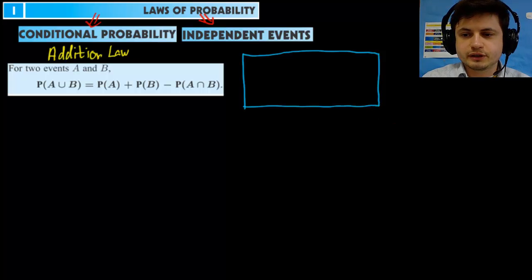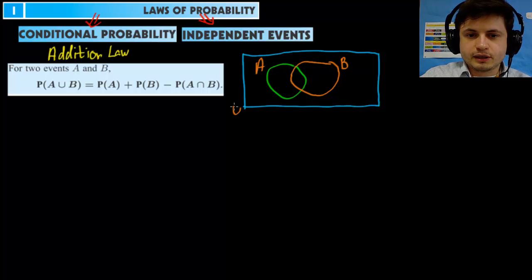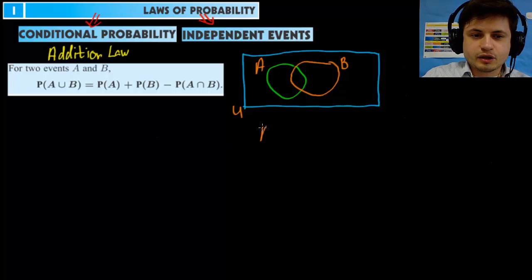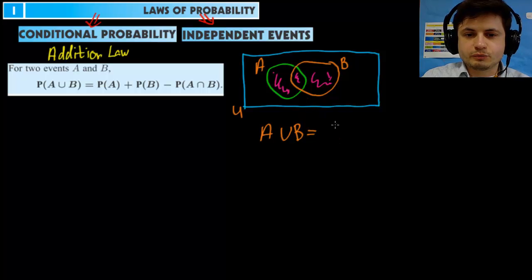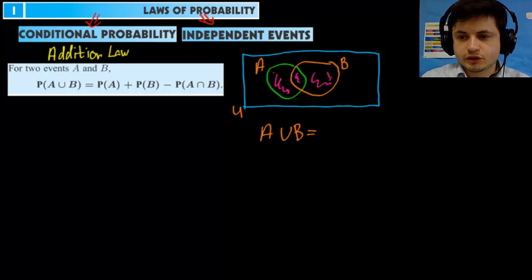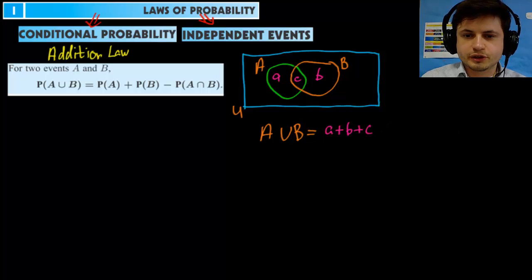We're actually used to seeing this a little differently. Before, when using Venn diagrams with two events — this is A, this is B, this is U — we knew that A or B is a combination of all three parts. Let's call them part A, part B, and part C. So Venn diagram-wise, this was always A plus B plus C because this is an inclusive disjunction.